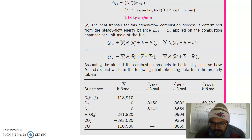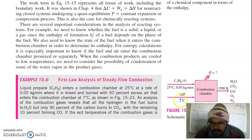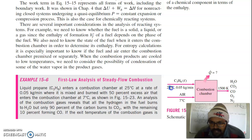Here H_f is the enthalpy of formation and H is the enthalpy at temperature. Air enters at 7°C (280 K), fuel enters at 25°C (298 K), and products exit at 1500 K. So enthalpy values are taken from tables at three temperatures: 280 K, 298 K, and 1500 K.